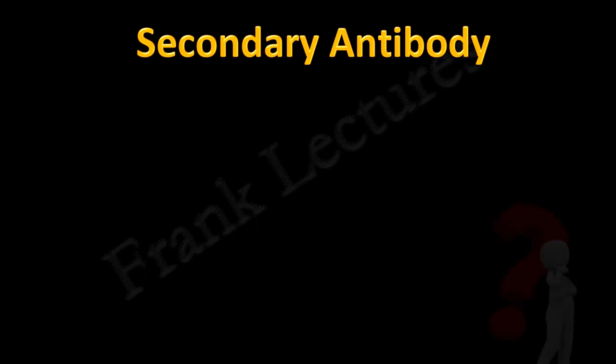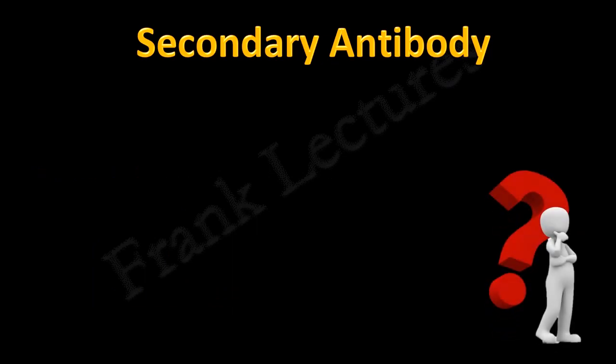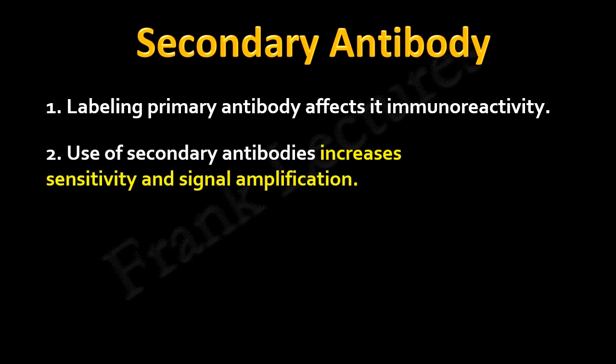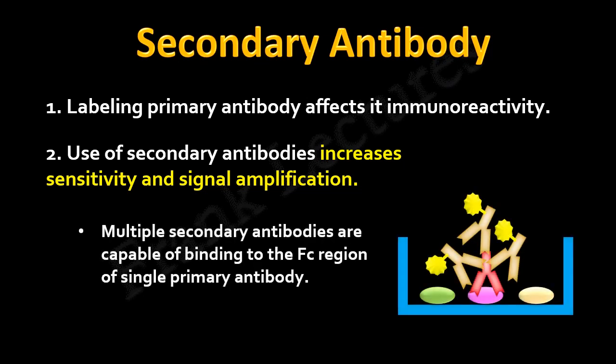Now the question is: why are secondary antibodies required when detection can be done using primary antibodies? There are many reasons for this. The two most important reasons are: first, labeling a primary antibody affects its immunoreactivity, which will automatically interfere with the sensitivity and specificity of the detection assay. Second, use of secondary antibodies increases sensitivity and signal amplification. This is because multiple secondary antibodies are capable of binding to a single primary antibody at their FC region.